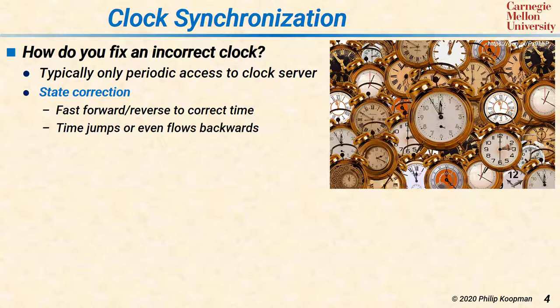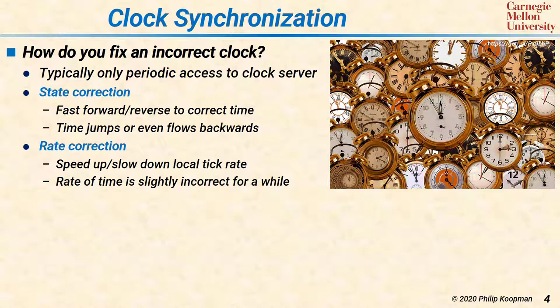The alternate way to adjust time is rate correction. In rate correction, you don't actually fast forward or reverse. What you do is slightly speed up or slow down the local tick rate. For example, if you have a software interrupt that's adding 53 to the local time every timer interrupt, you might change it to 54 to run the clock a little faster, or change it down to 50 to run it slower — it will take more ticks before it's time to update the clock.